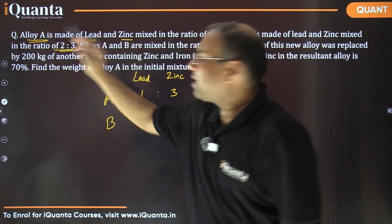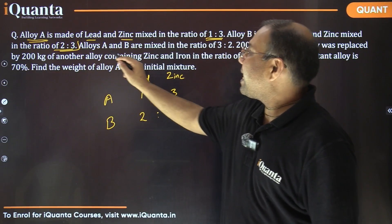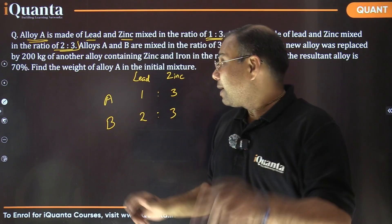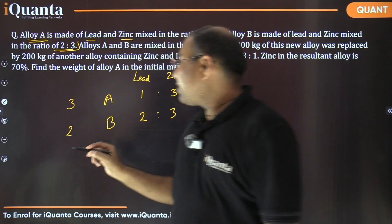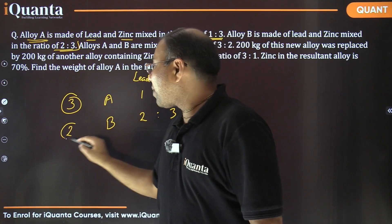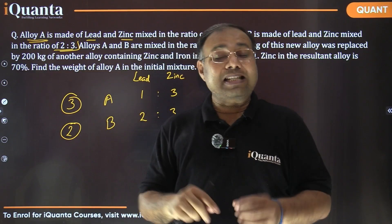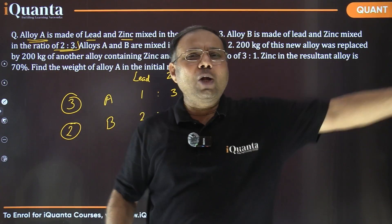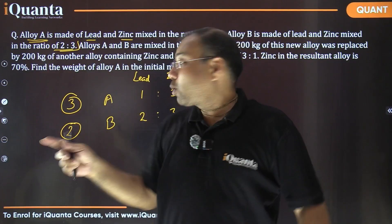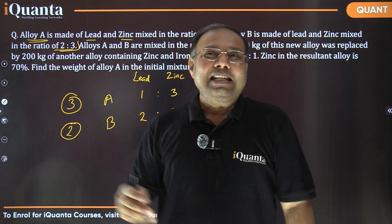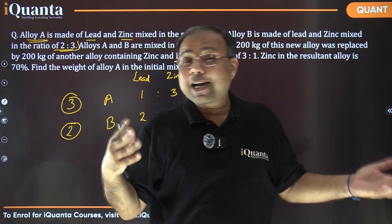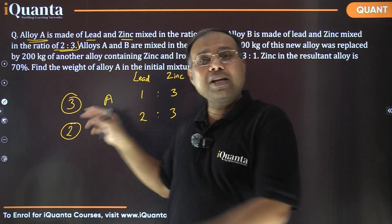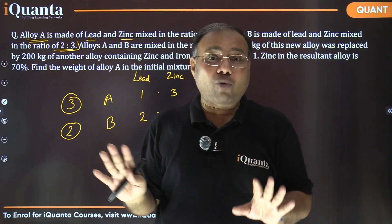Alloys A and B are mixed in the ratio 3:2. That's an important part. When we mix three parts of A and two parts of B, each part must have equal quantity. For example, if this is three kilos and that is two kilos, the ratio is 3:2. Three kilos and two grams wouldn't make sense — the ratio wouldn't be 3:2. So each part must be in equal quantity.